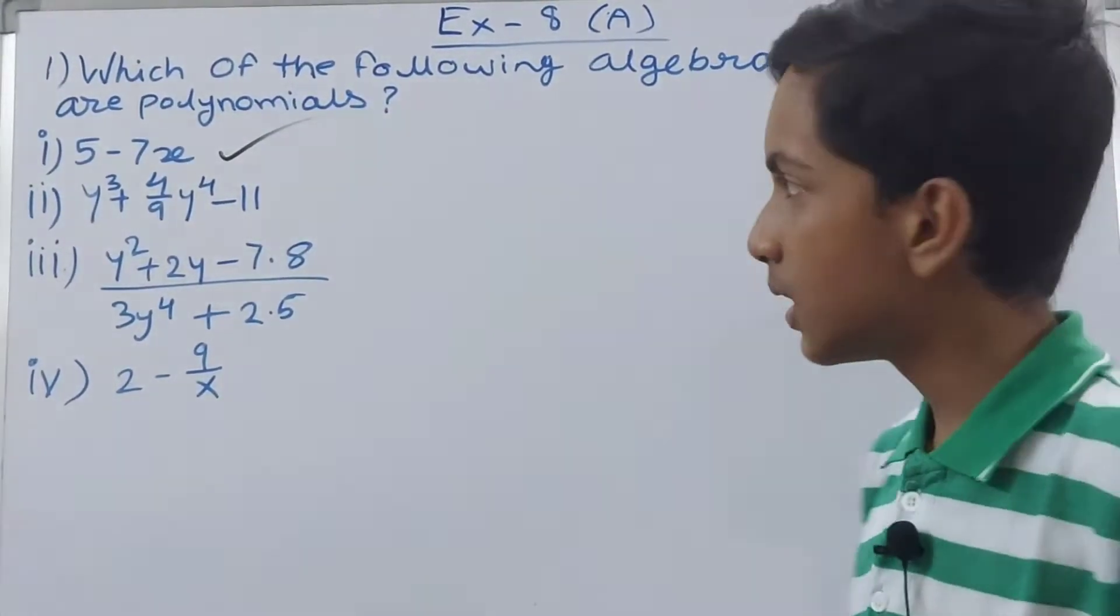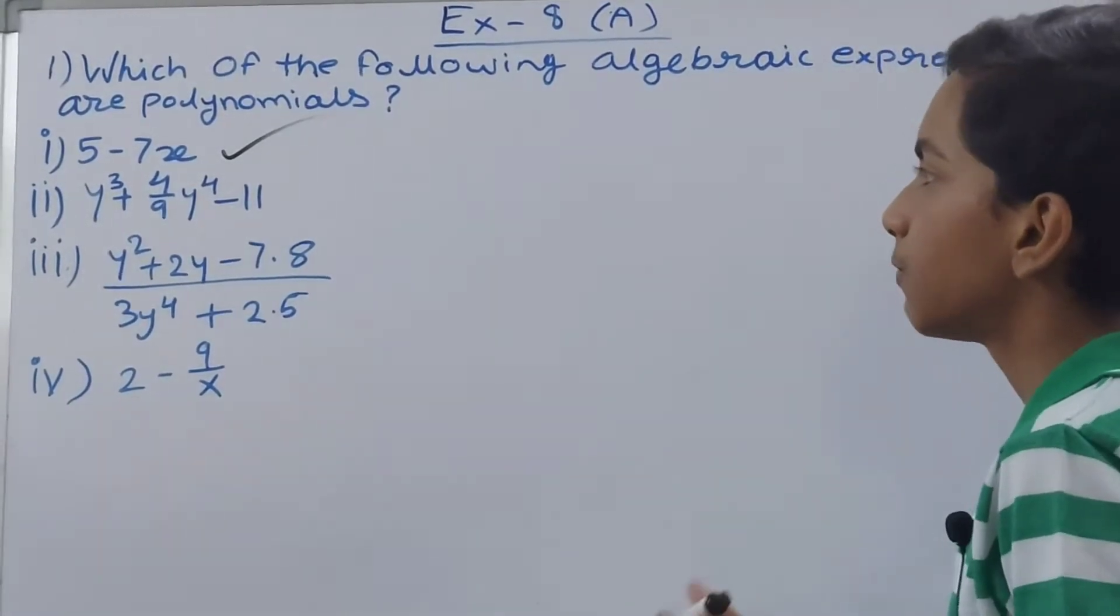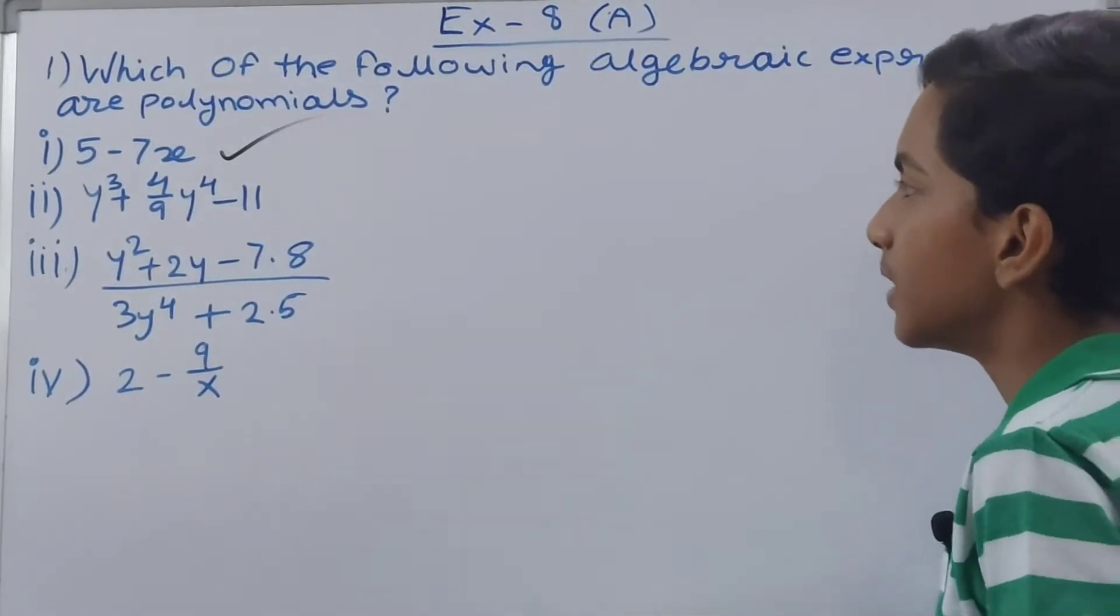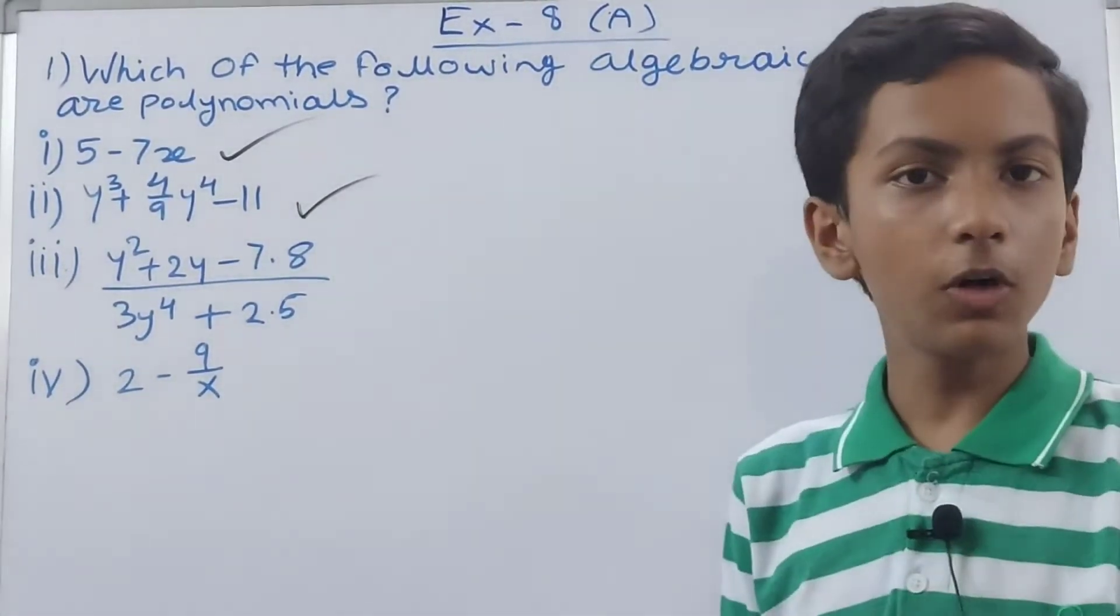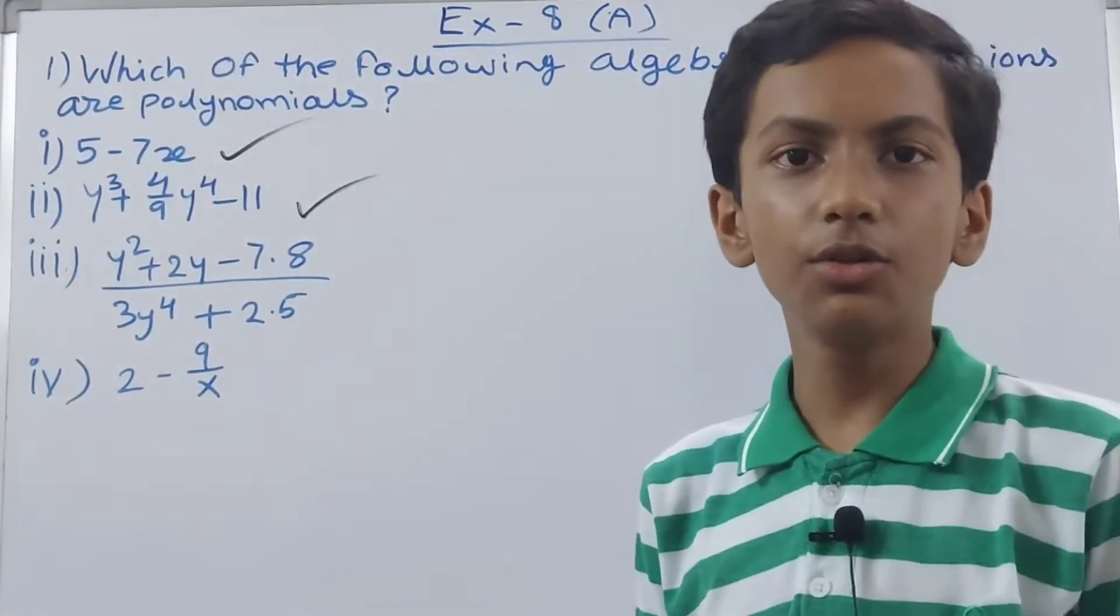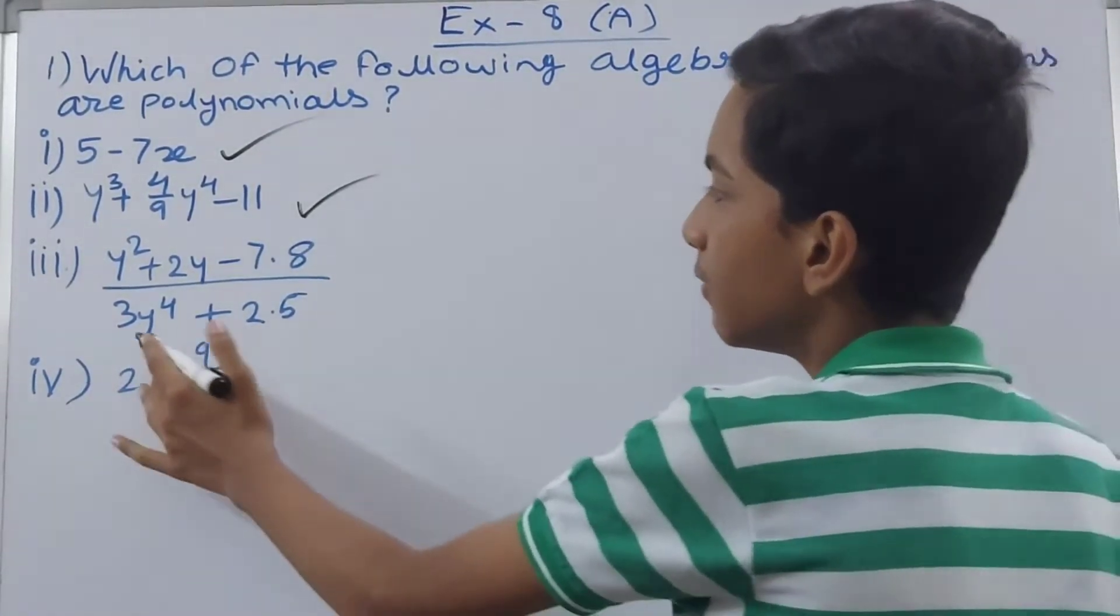Next we have this one: y to the power 3 plus 4 upon 9y to the power 4 minus 11. This one is also a polynomial. Again you have to watch out that the variable is not getting used as a denominator.